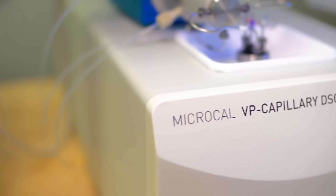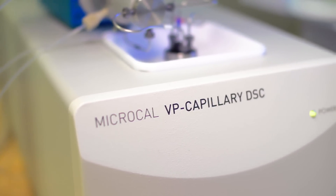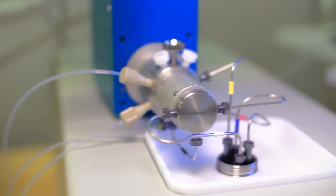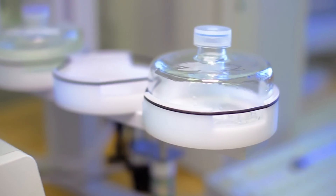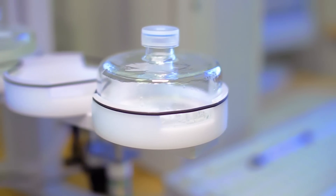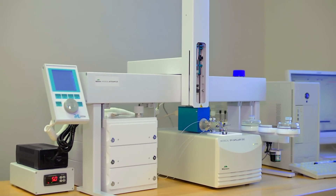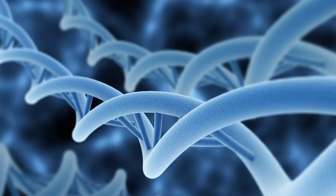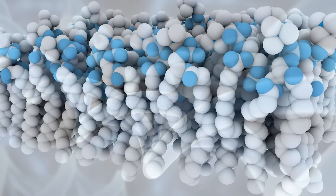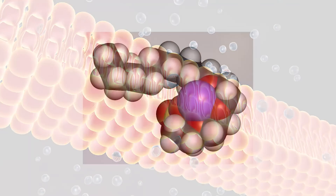The MicroCal VP Capillary DSC range is a highly sensitive, easy to use differential scanning calorimeter for the study of samples in solution. It is used to directly measure intramolecular stability of structured macromolecules such as proteins and nucleic acids, as well as intermolecular stability of complexes such as oligomeric proteins, nucleic acid duplexes, and lipid and detergent molecular systems.